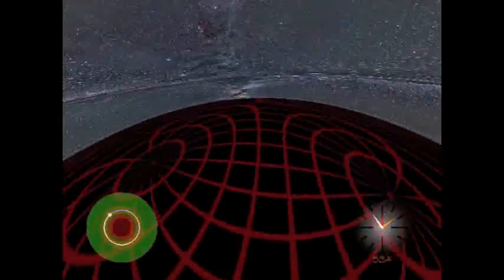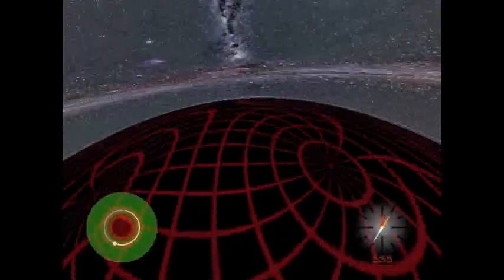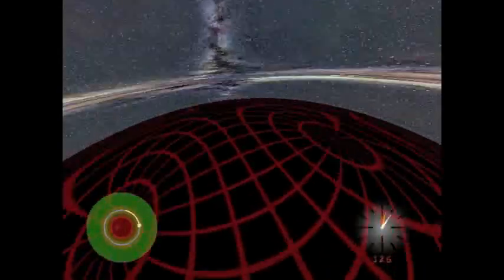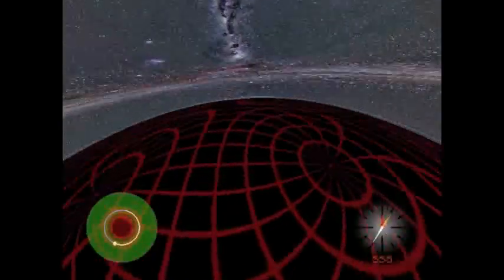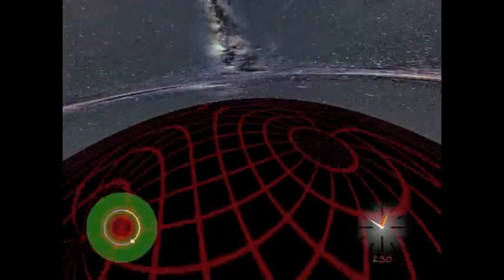Also in this region, we arrive at a special location known as the photon sphere, the distance where light rays can remain in orbit. This is the closest to the black hole that anything can get and remain in orbit. For our rocket to stay here, our thrusters would have to expend an infinite amount of energy.